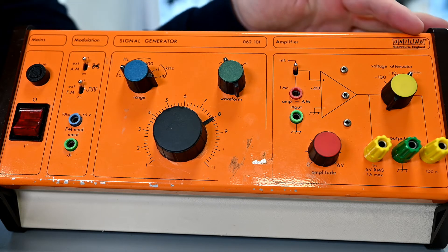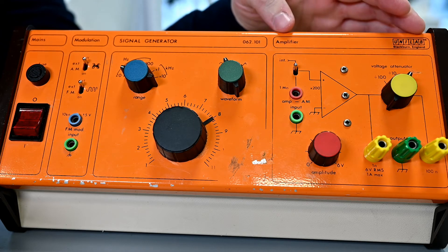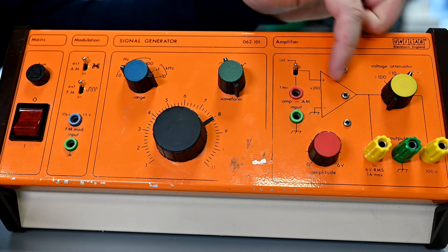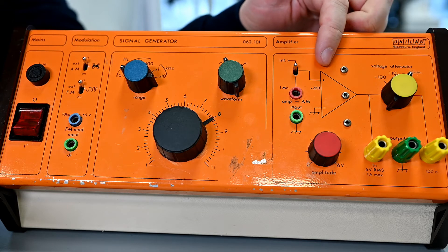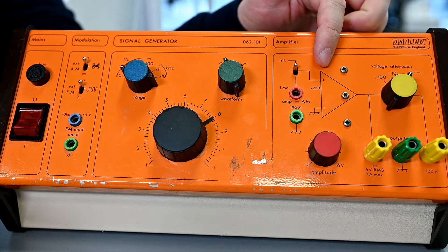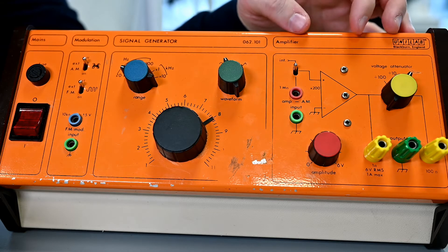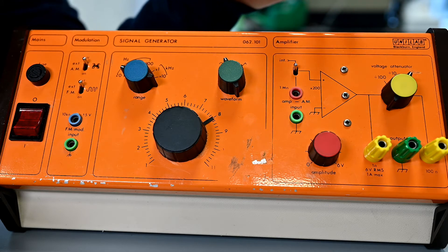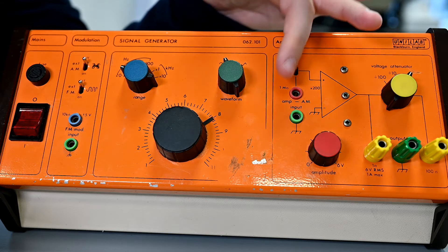This section of the signal generator is to do with the voltage output. You can see the triangular operational amplifier. It has the capacity to amplify signals you put into this. If I wanted to put a signal from something else into here to amplify, I could plug it into these sockets here.